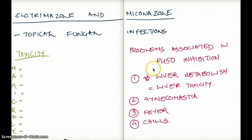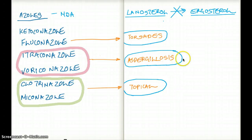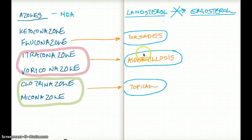What about itraconazole and voriconazole? Itraconazole and voriconazole are often used for aspergillosis. A specific toxicity for fluconazole, which is not seen in other azoles, is torsades de pointes.